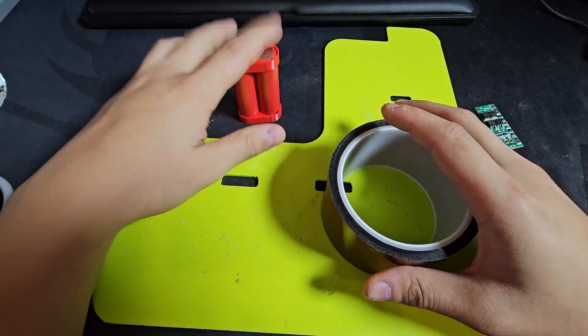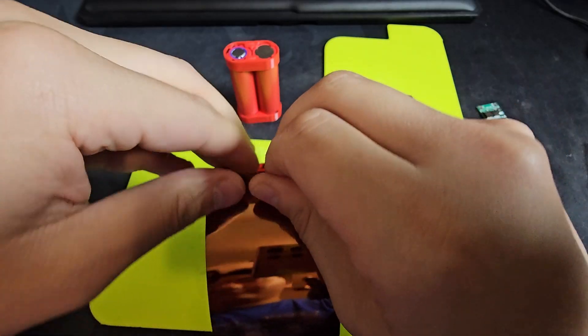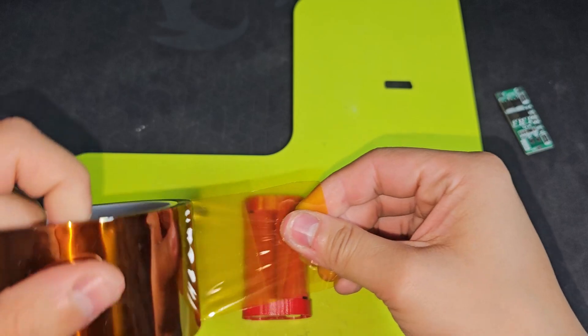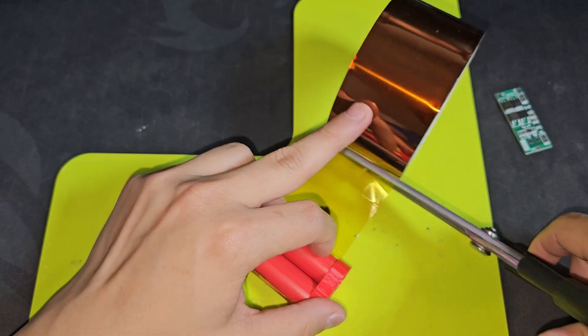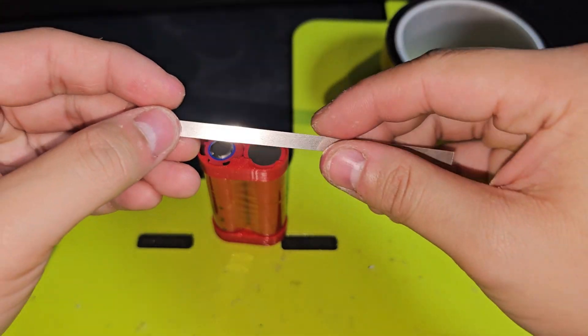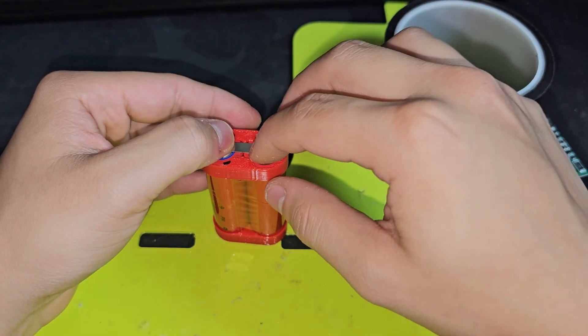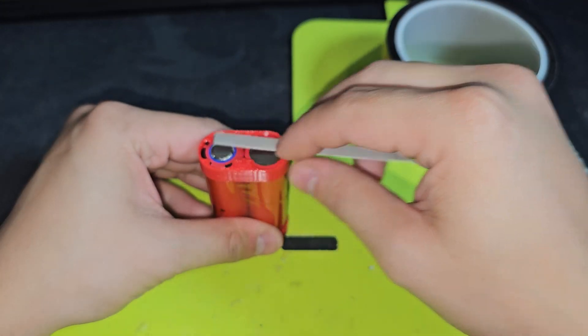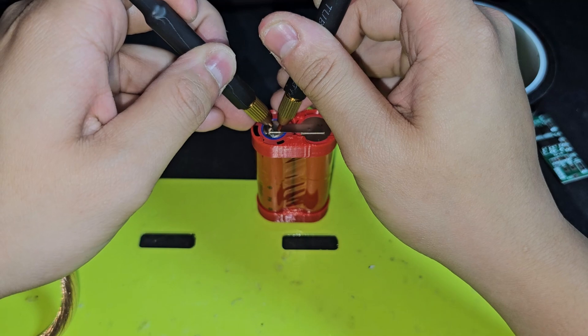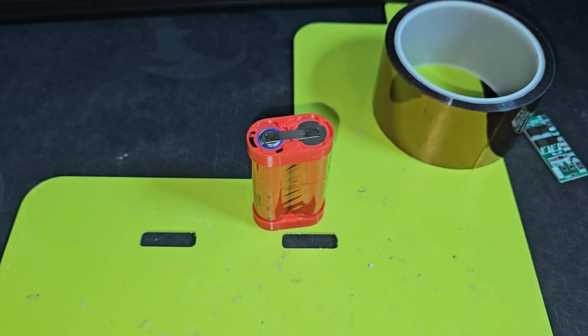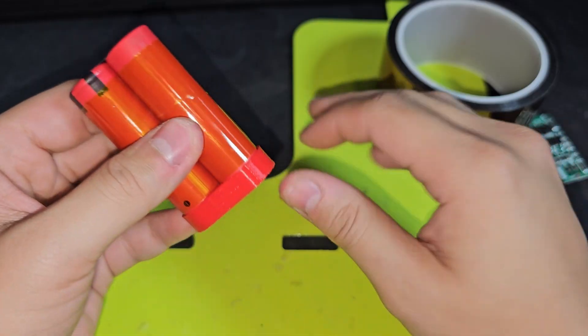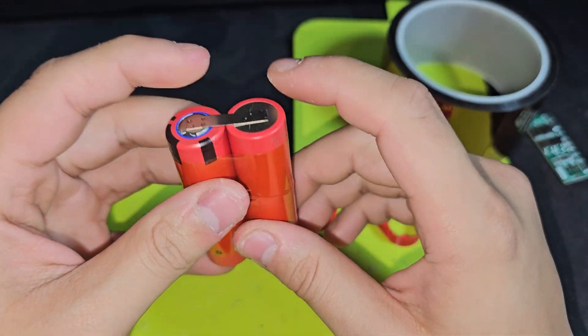Put some Kapton tape onto the battery pack first. I'll be using some nickel strip to connect them together in series. There we go. Connect it together now. I can remove this now, because they're not going to separate.